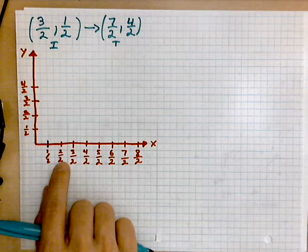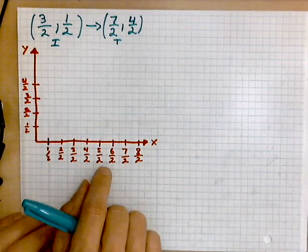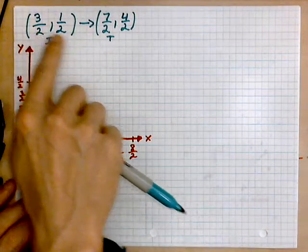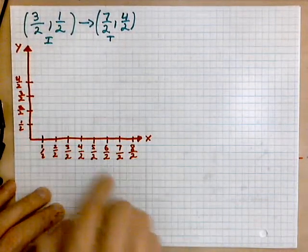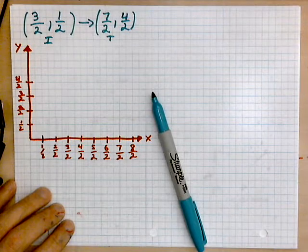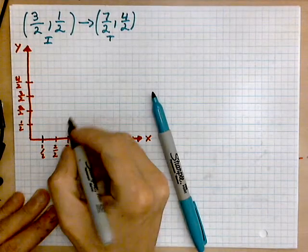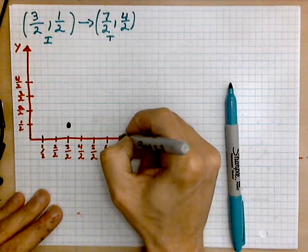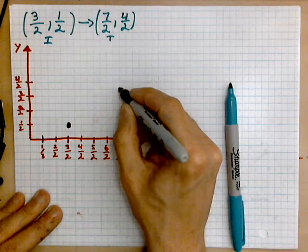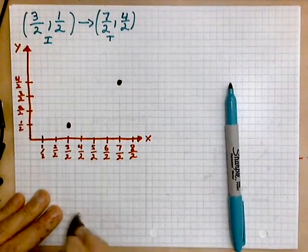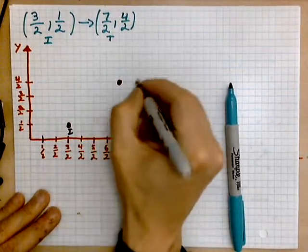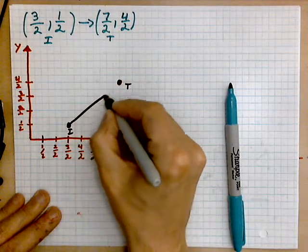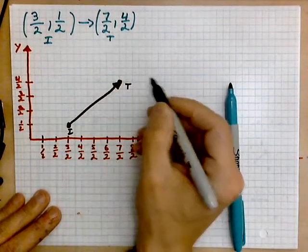This is one half, this is two one-halves, this is three one-halves, this is four one-halves. I know to do that for the sake of convenience because this is a half and that's a two. Once we've done this, the rest looks like this. Mark the first point — three halves and one half — so three halves and then one half is over here. Mark the second point — seven halves and four over two. So seven halves is over here and then four over two is over here. Those are our two points: the initial and the terminal. Now I draw an arrow to represent our vector coming from the initial over to the terminal.